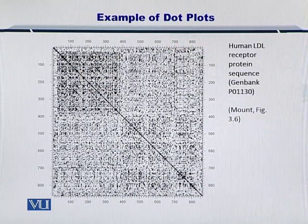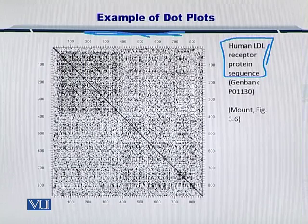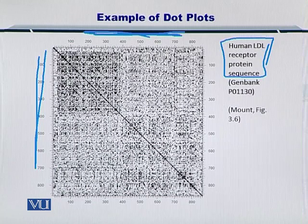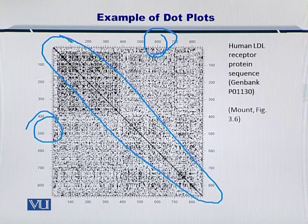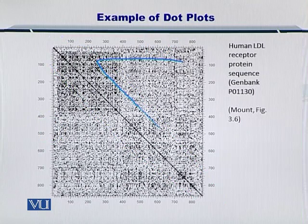Here I will give you a sequence alignment between the human LDL receptor protein against itself. You have this protein sequence on top as well as on the left side. Unlike the previous example with cytochrome C from two different species, in this case the same protein is placed on both axes. As you can see, the diagonal is continuous and clear. A non-broken diagonal means the two sequences match exactly. However, in other areas of the dot plot there are a lot of dots and noise.